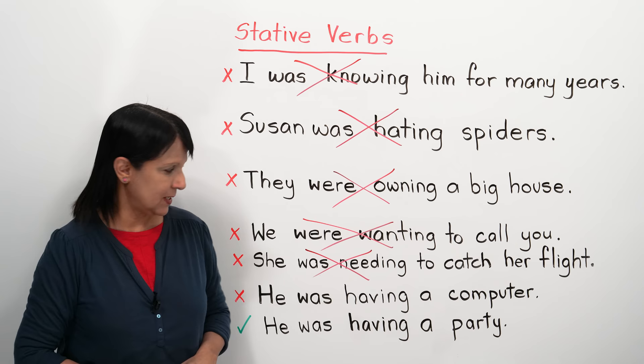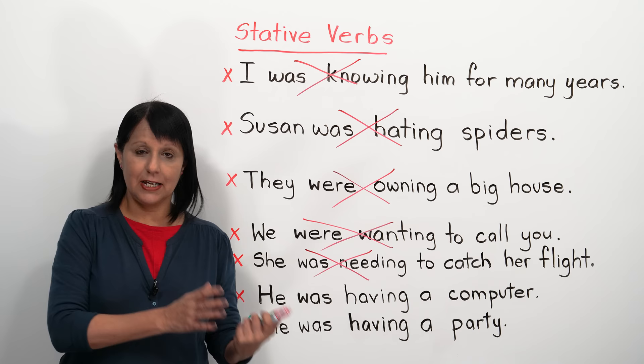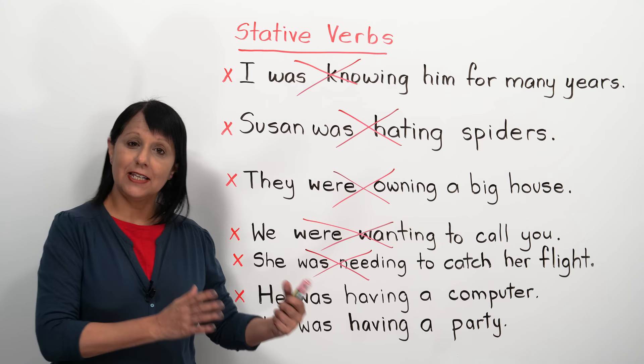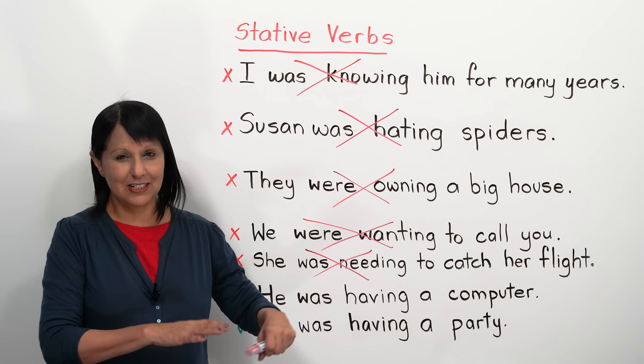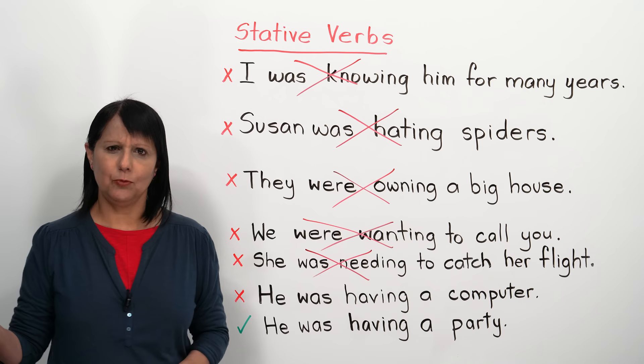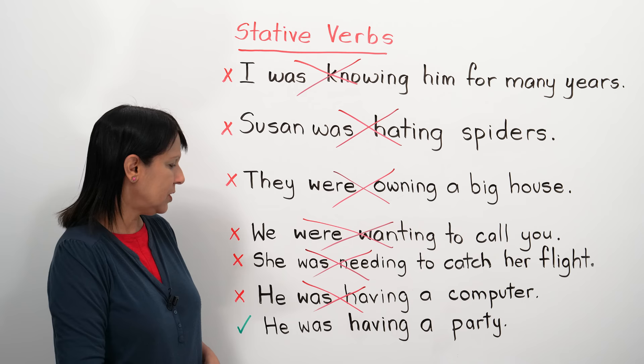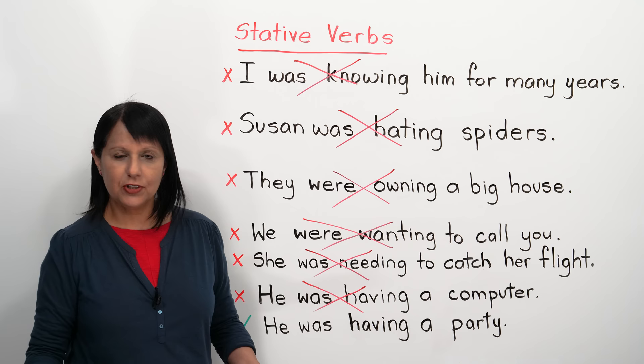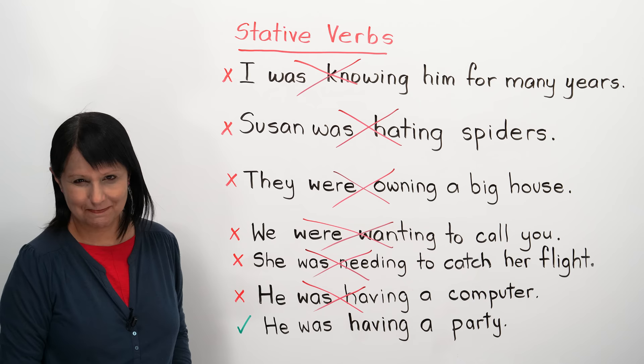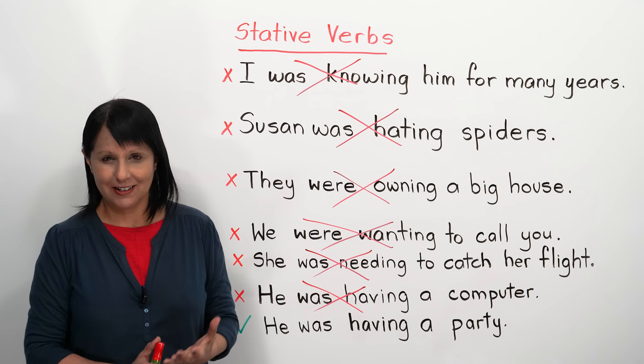There is one interesting verb to be aware of: the verb 'to have.' It sometimes has a stative meaning and sometimes a more dynamic or action meaning. When it has a stative meaning, we cannot use it in the continuous tense. So 'He was having a computer' is wrong — we must say 'He had a computer.' But 'He was having a party,' 'He was having a good time,' and 'He was having fun' are all correct.